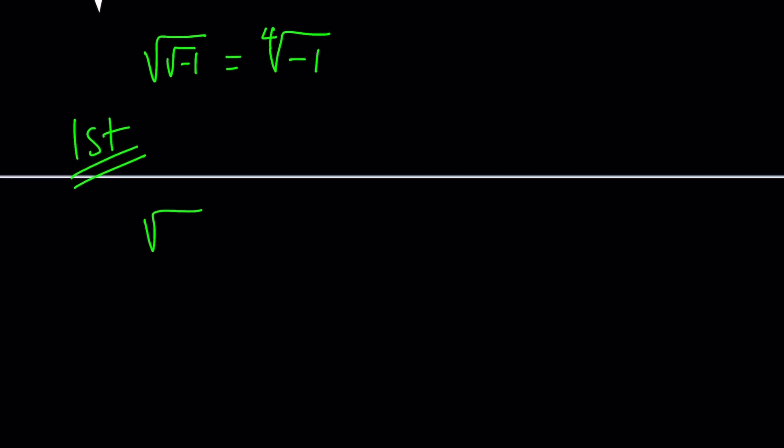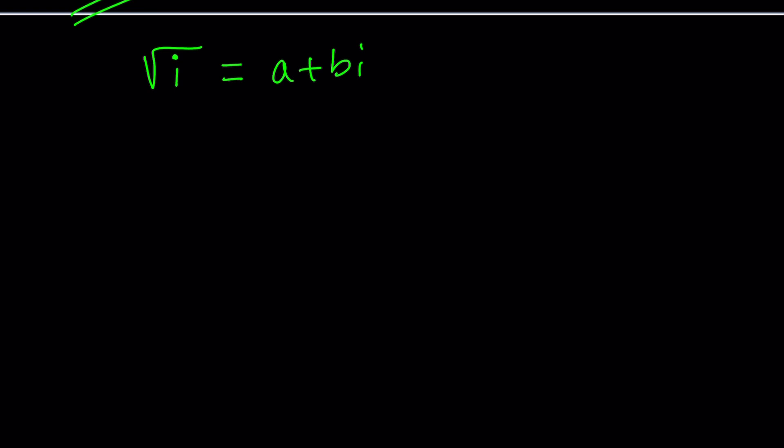So why don't we use the same method here? Let's go ahead and set the square root of i equal to a plus bi. When we solve for a and b, we found the square root of i. Because the square root of a complex number is also a complex number. But why do I keep saying the square root? We're going to talk about that as well. So let's go ahead and square both sides.